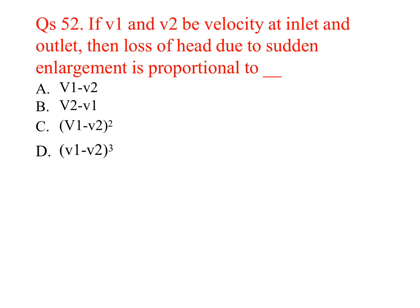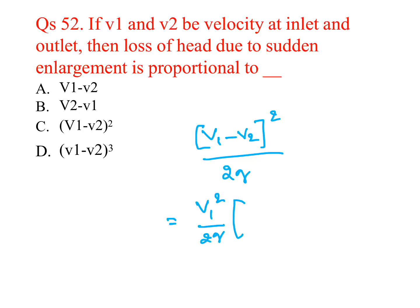If V1 and V2 are the velocities at inlet and outlet, then the loss of head due to sudden enlargement is (V1 − V2)² / 2g. This can be rewritten as (V1² / 2g) × (1 − A1/A2)², where A1 and A2 are the areas at inlet and exit. The answer is option C.